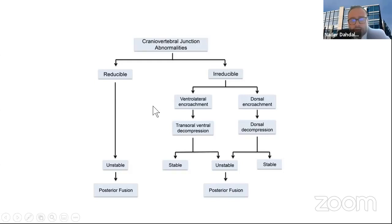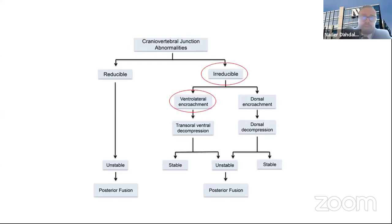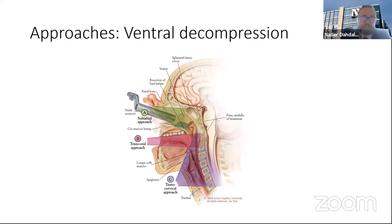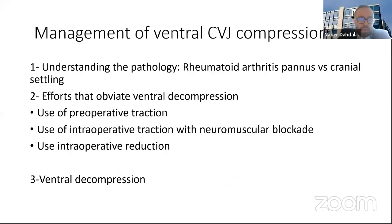Now let's talk about the rest of the algorithm. If there is ventral encroachment or a retro-odontoid collection, should we go ventrally? The old algorithm says yes. However, understanding the pathology leads to different conclusions. Classically, ventral pathology is addressed through an endoscopic endonasal approach, transoral approach, or a high cervical retropharyngeal approach. That holds true for some pathologies, but not all.